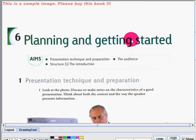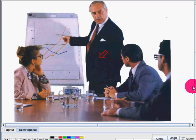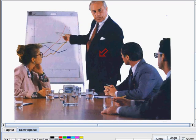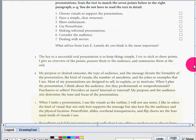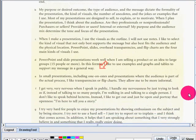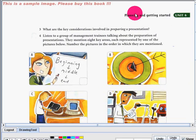Last time we discussed section number three: Presentations, Planning and Getting Started. We discussed the characteristics of a good presentation and we did the text as well. Now let's have Unit 6, which is under the topic Planning and Getting Started still.